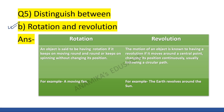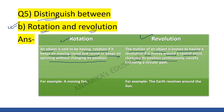Question 5B: distinguish between rotation and revolution. Rotation — an object is said to be in rotation if it keeps on moving round and round or spinning without changing its position. Example: a moving fan. Revolution — the motion of an object is known as revolution if it moves around a central point, continuously changing its position and usually following a circular path. Example: the Earth revolves around the Sun.